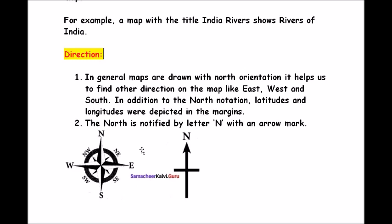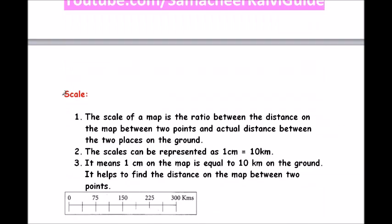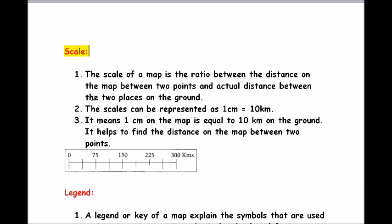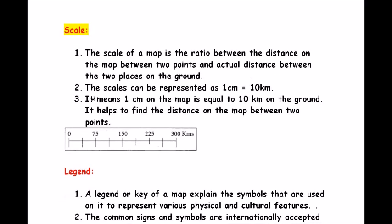Scale: the scale of a map is the ratio between the distance on the map between two points and the actual distance between two places on the ground. The scale can be represented as 1 cm equal to 10 km, meaning 1 cm on the map equals 10 km on the ground. It helps to find the distance on the map between two points.